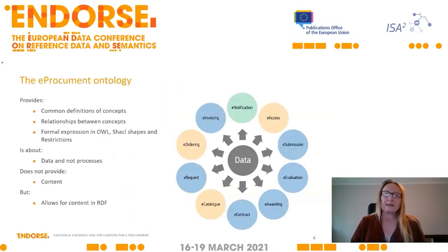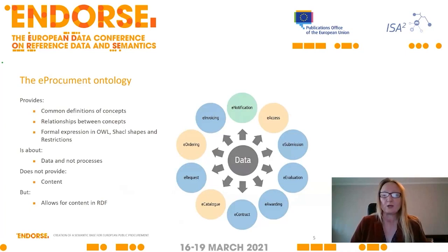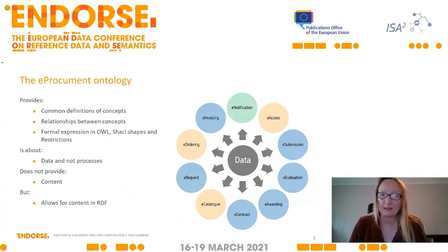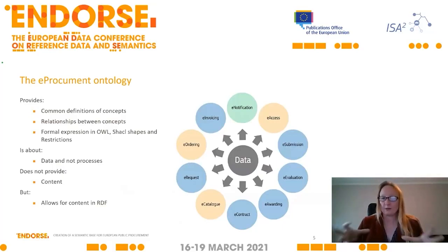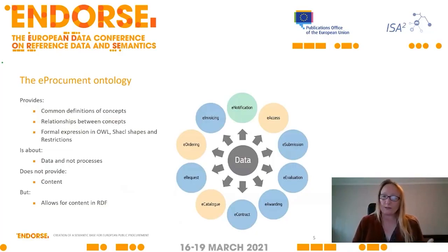The Publications Office was responsible for the public procurement ontology; DG Grow for the ESPD and eCertis, which will also be linked to the ontology; and DIGIT are working on the BDTI pilot project, which will be discussed later and which reuses the ontology as a basis for the data that is exchanged. So let's now look at what the ontology actually is. It gives a common information definition of concepts and provides the relationships between them. You have the data in the center of this flower, and it just goes out to all the different phases of e-procurement.